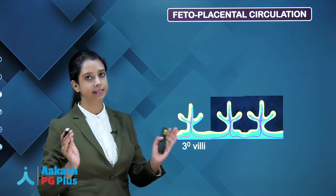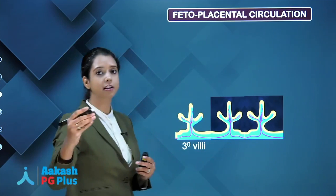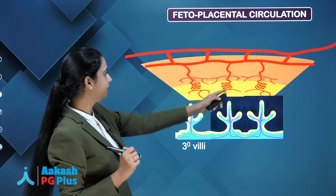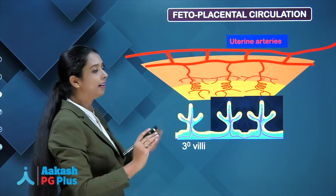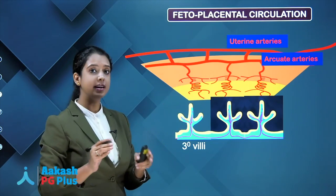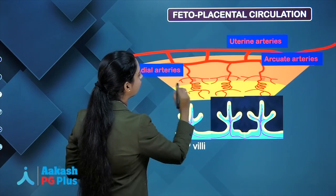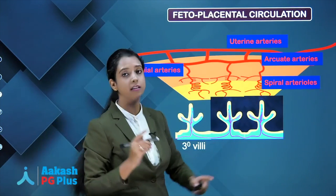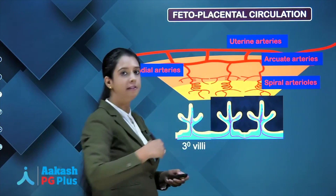These villi contain fetal blood vessels. Maternal blood lies between these villi in the intervillus space — that is how exchange occurs. Maternal arteries pour blood into the intervillus spaces. The uterine arteries send arc-shaped arteries inside the myometrium called arcuate arteries. Arcuate arteries send radially-arranged branches called radial arteries, which further send corkscrew-type arteries called spiral arteries. These spiral arterioles are the ones invaded by endovascular trophoblast and are converted into big wide channels, ultimately filling the intervillus space. This is how fetoplacental circulation is established.